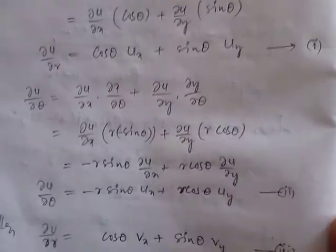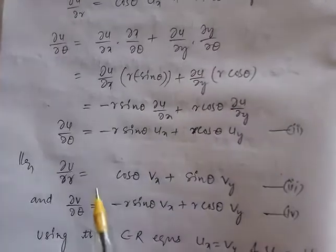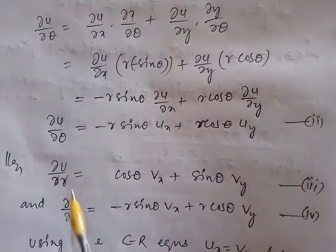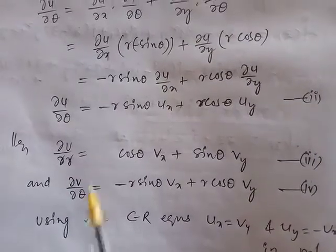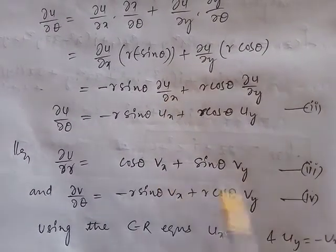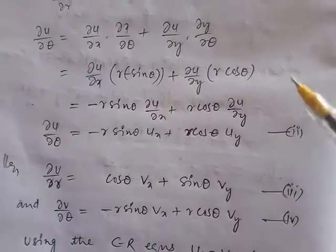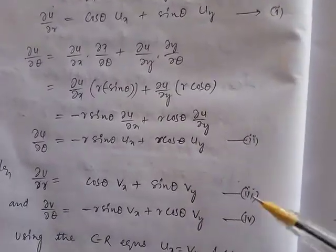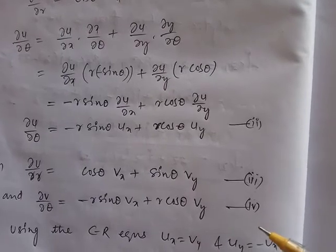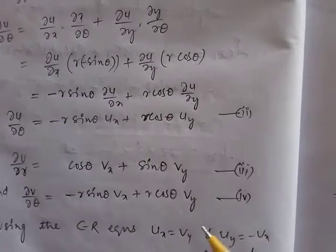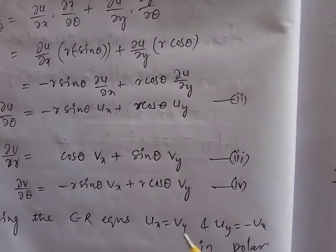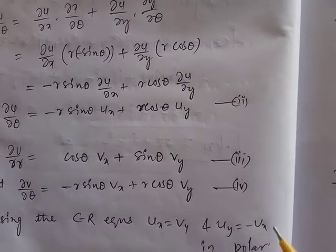We now have four equations from the chain rule. Similarly, for V with respect to r and with respect to θ, in place of U we write V. So we have four equations total. Now I am using the Cauchy-Riemann equations in Cartesian form: Ux = Vy and Uy = -Vx.